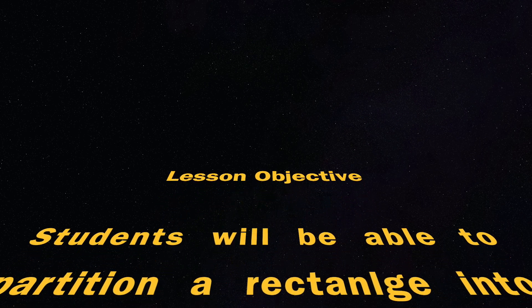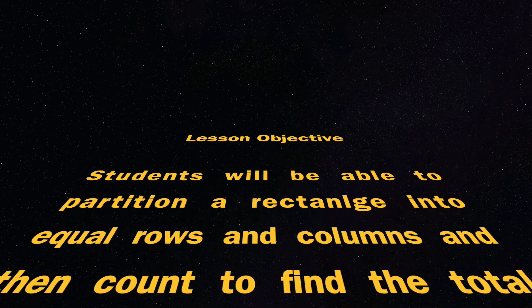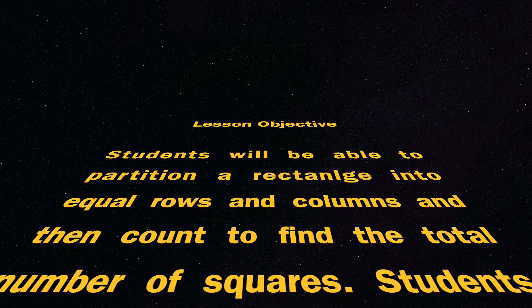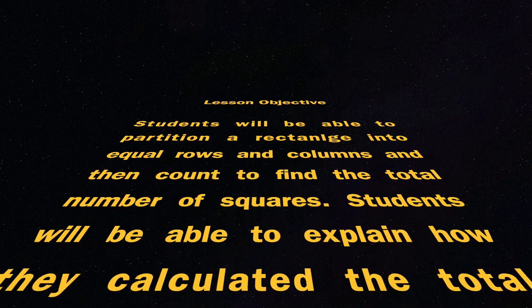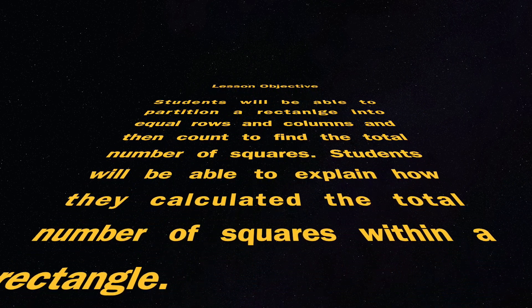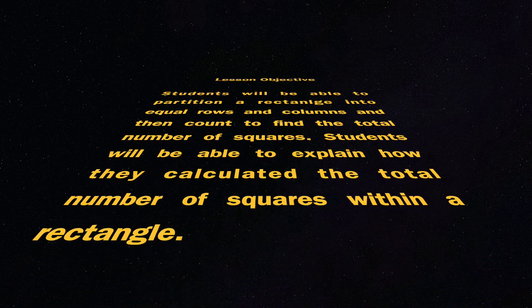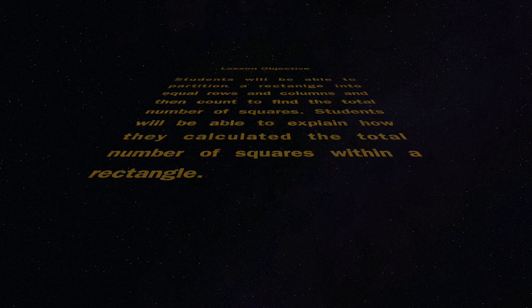In this lesson, students will be able to partition a rectangle into equal rows and columns and then count to find the total number of squares. Students will also be able to explain how they calculated the total number of squares within a rectangle.